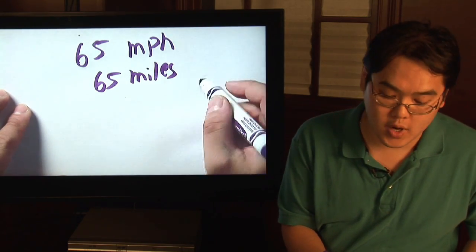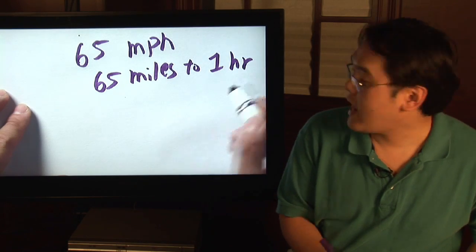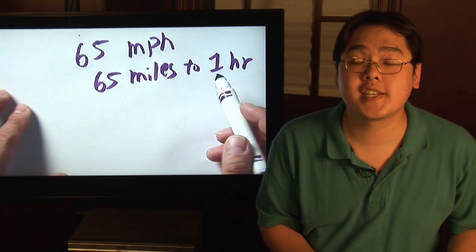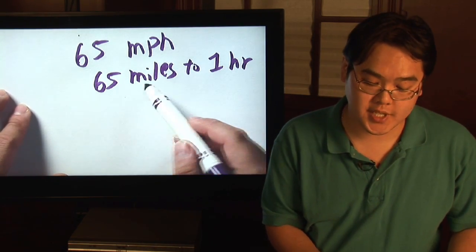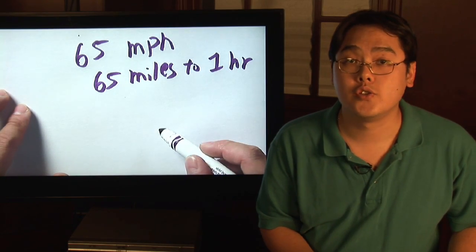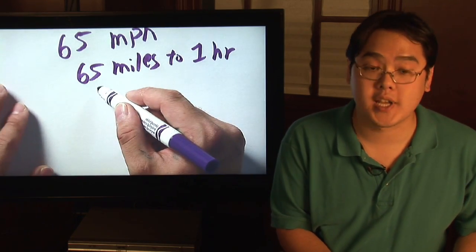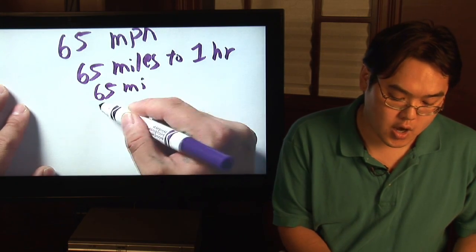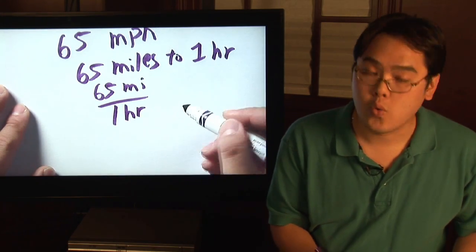What that is, is 65 miles to one hour. That's your second quantity. This is an example of a unit rate because you have 65 miles to one hour. You can express that as 65 miles over one hour.